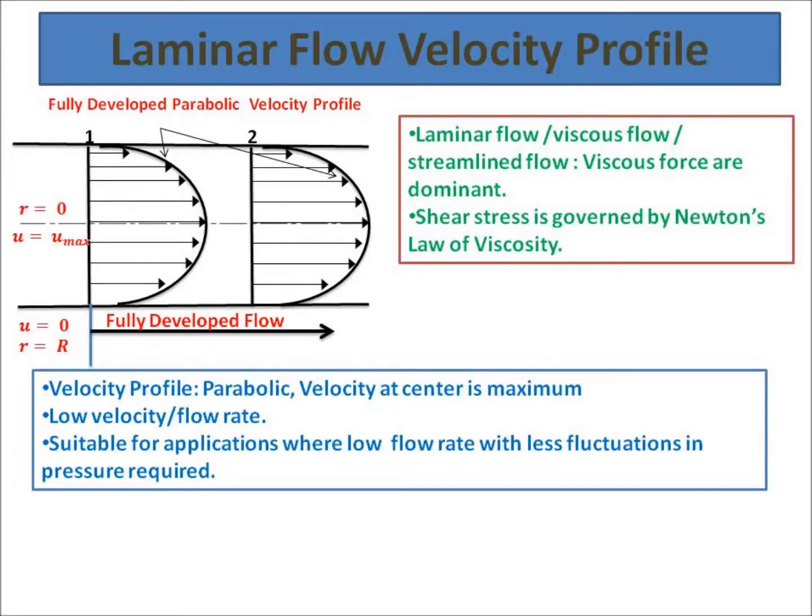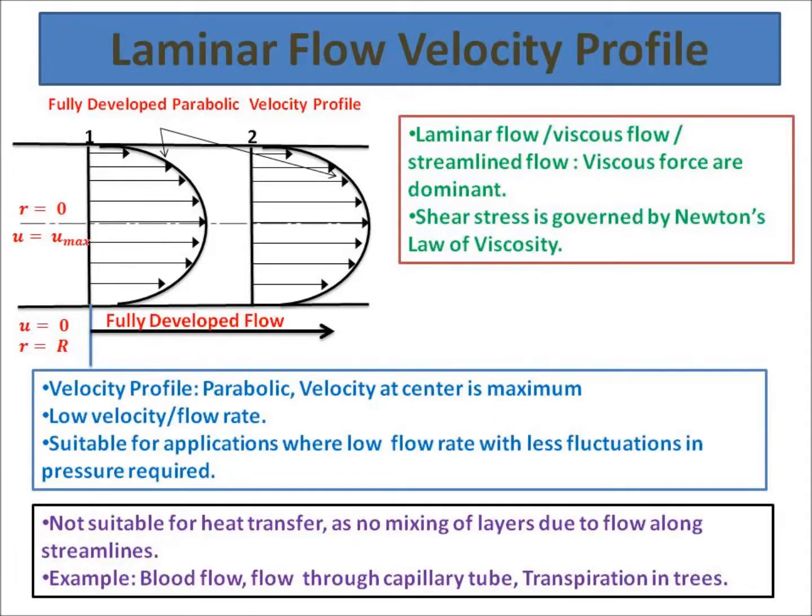Hence this flow is also called streamlined or viscous flow where the viscous forces are dominant. For flow through the pipe in fully developed region for laminar flow, the velocity profile is parabolic in nature. In the figure shown you can see that at the center the velocity is maximum where the radius is zero, while at the pipe wall or boundary the velocity is zero where the radius is maximum.